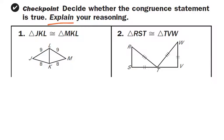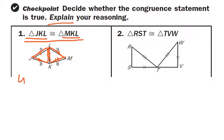With our first triangle, we've got the nine congruent to the nine, the eight congruent to the eight, and they share a side — so that's congruent to itself. Yes, the two triangles are congruent. Double-check your congruence statement: JKL goes across the eight, across the shared side, and the nine would be the last one. MKL goes across the eight, across the shared side, and the nine is the last one. Corresponding parts need to be in corresponding positions. The answer is yes, and the reason is the Side-Side-Side Congruence Postulate.